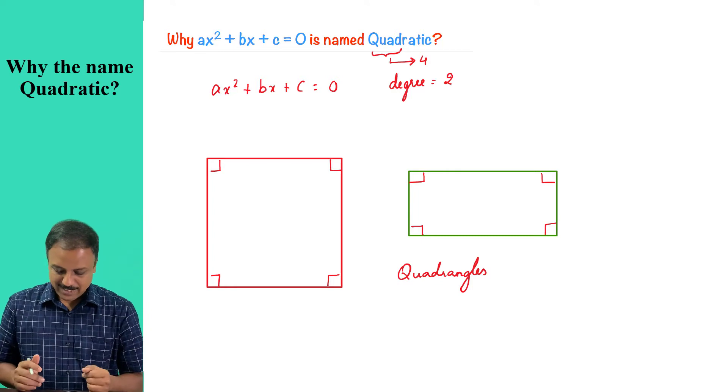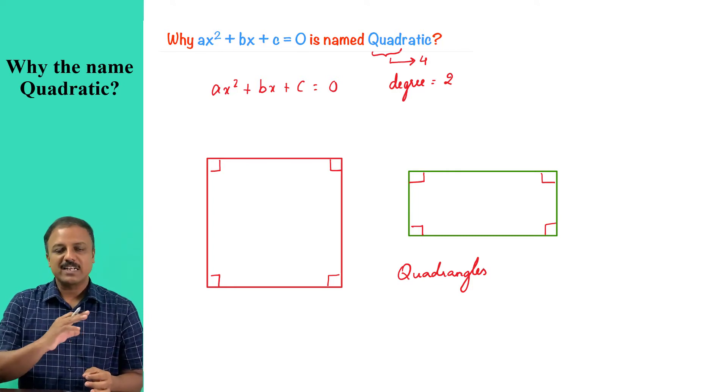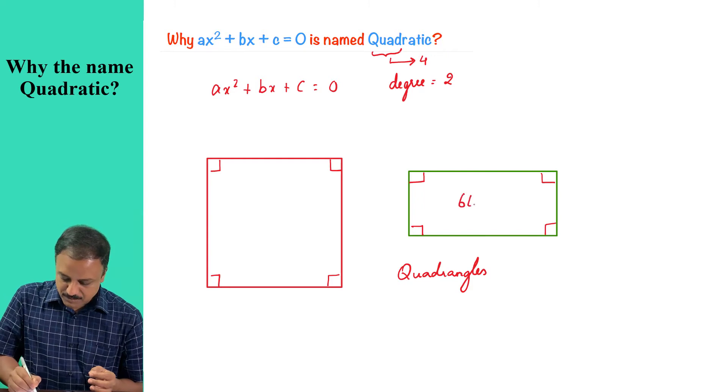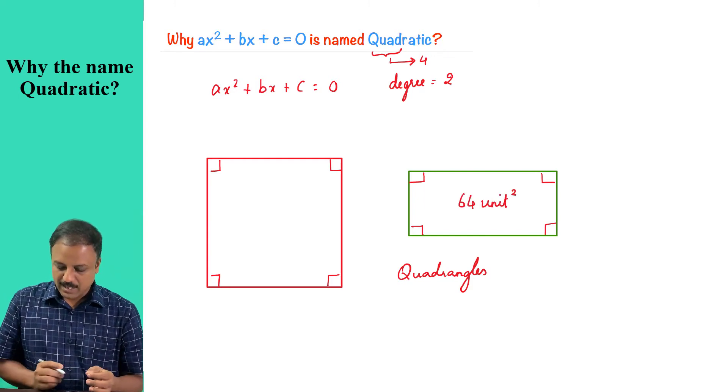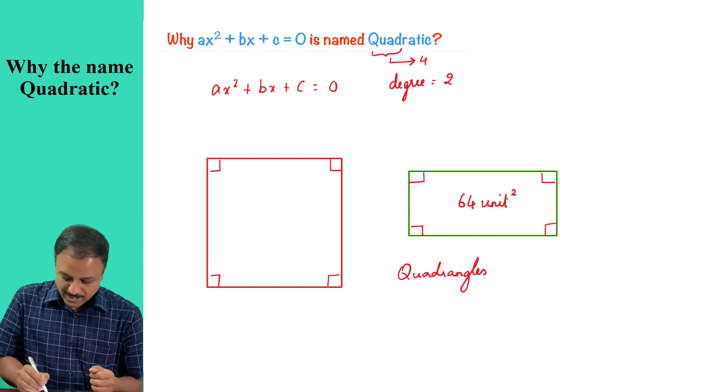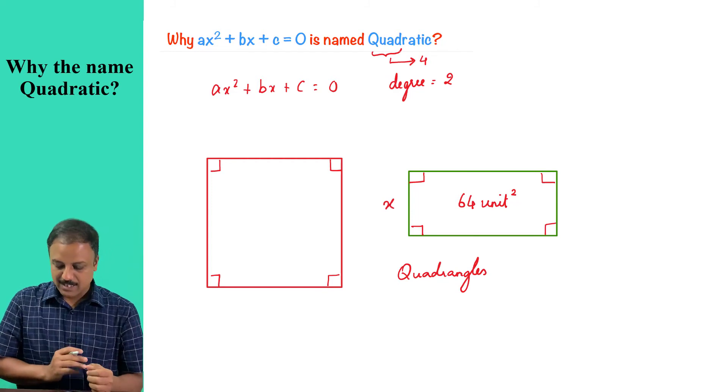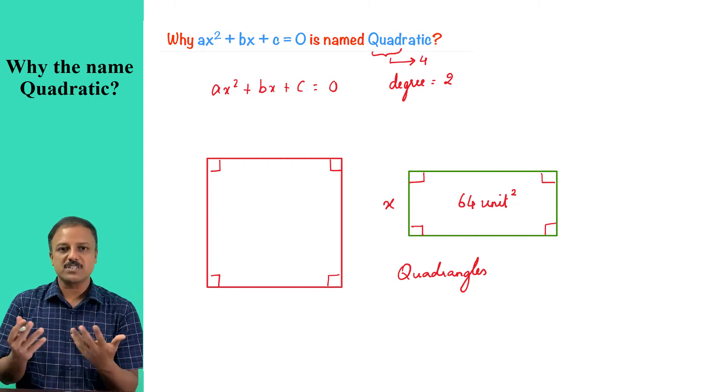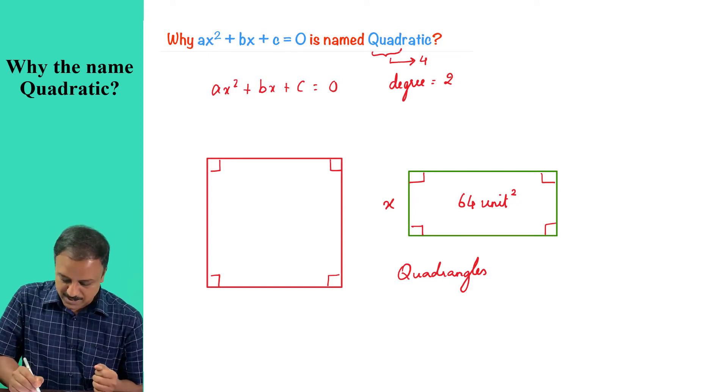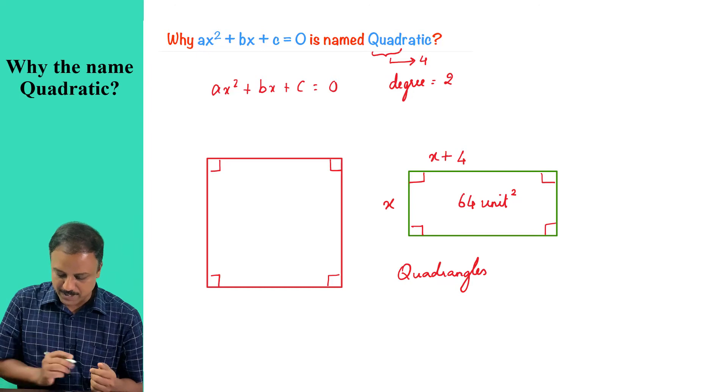Let me take an example. Say for example, I have a rectangular field whose area is 64 units squared. And the side lengths of this field are one side has a unit of x and the other side is four units longer than x. So when I say four units longer than x, you're going to represent the other side as x plus four or four plus x.